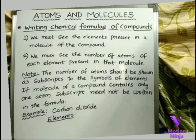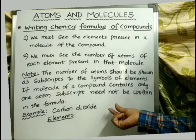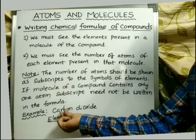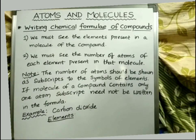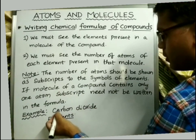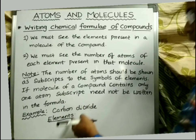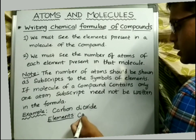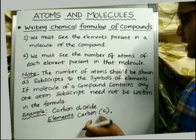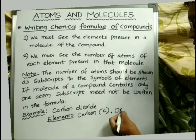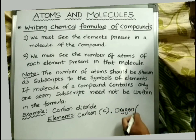Let us see one example: carbon dioxide. We will apply both rules for writing the chemical formula of this compound. According to the first rule, the elements present in this molecule should be identified. The elements present are carbon, whose symbol is C, and oxygen, whose symbol is O.